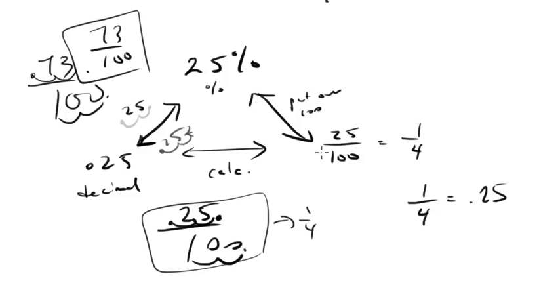To go from a fraction to a percent, you first convert to a decimal using division, then transform that decimal into a percent by moving the decimal point two spaces to the right. So let's do some examples.